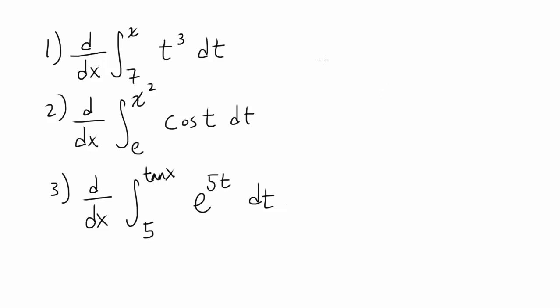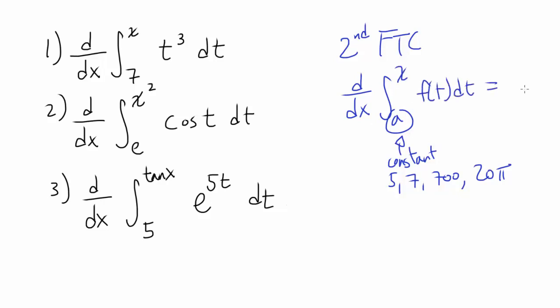In the last video, I introduced you to the second fundamental theorem of calculus, which says the derivative with respect to x of the definite integral from some constant a—this thing is constant, it can be 5, 7, 700, 20 pi, it cannot contain any variable—to x of f(t) dt turns out to be f(x). Let's use this to solve some problems.